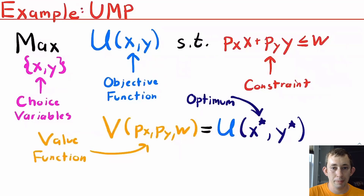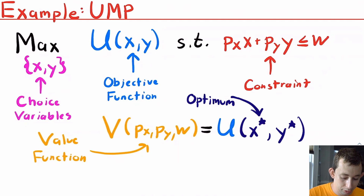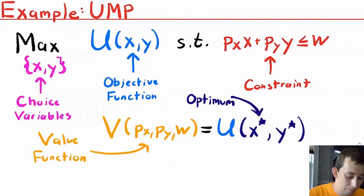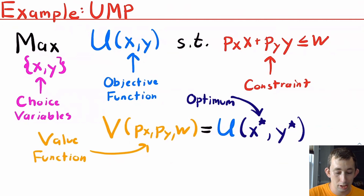Let's use the utility maximization problem in a bit more detail to make sure you understand, then we'll get right into those tables. We're trying to max utility subject to the budget constraint. The utility function is our objective function; the budget constraint is our constraint. Once we solve this, we get Marshallian demand — the optimal level of each good to buy — that's our optimum. If we take those optimal values of x and y and plug them back into the utility function, we get a utility value called indirect utility, which is the value function. Note that x and y are our choice variables, while px, py, and w are just parameters of the problem — not things we get to choose.